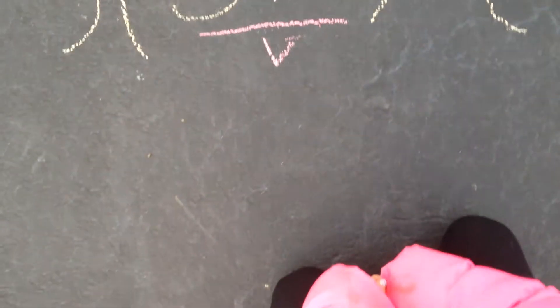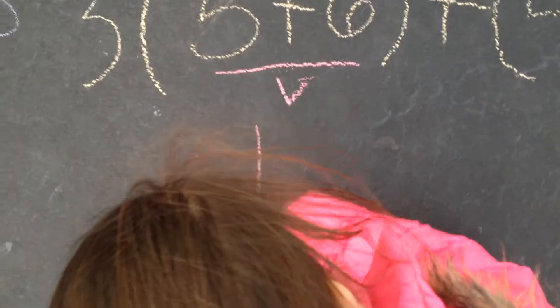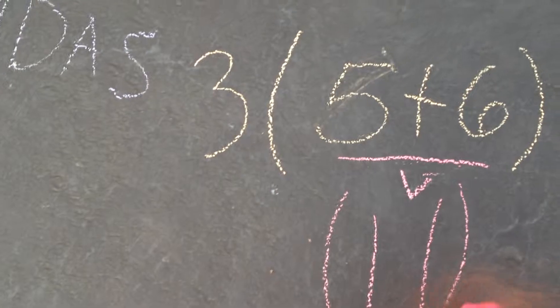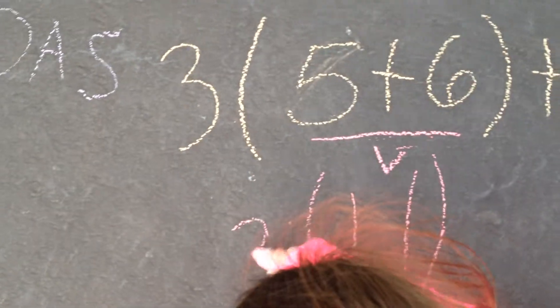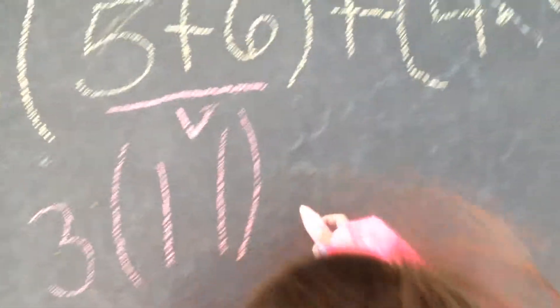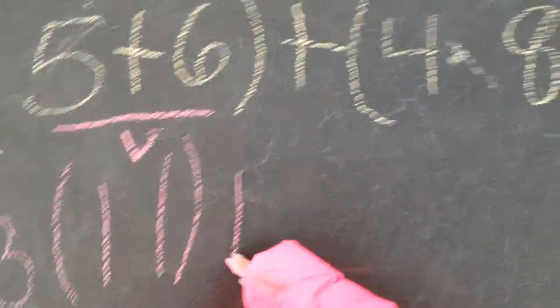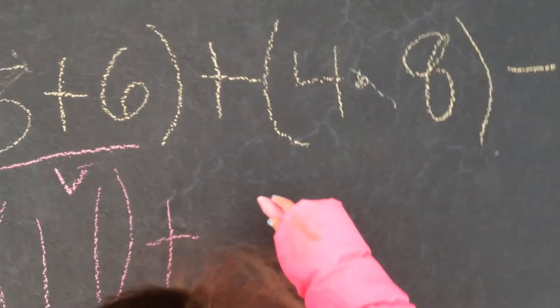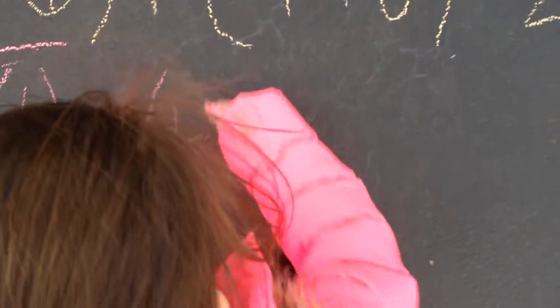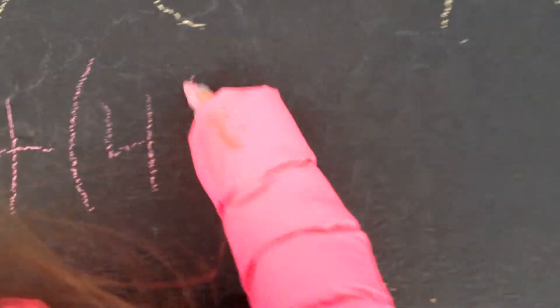5 plus 6 is 11, so under it we're going to write 11. Now we're going to rewrite the rest of the problem — then plus, in parentheses, 4 times 8.